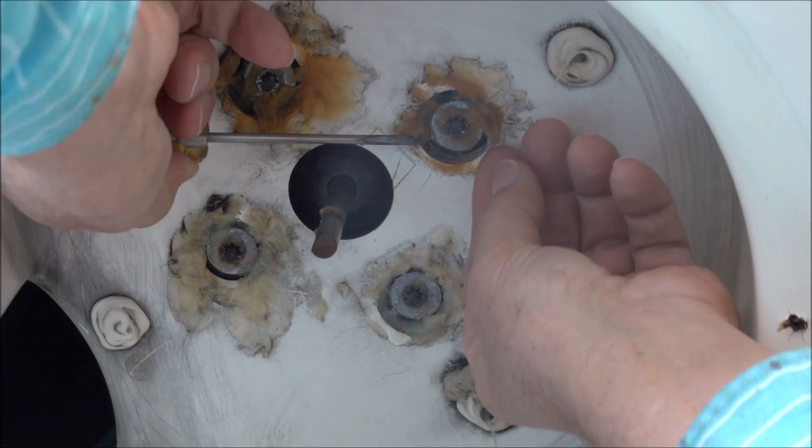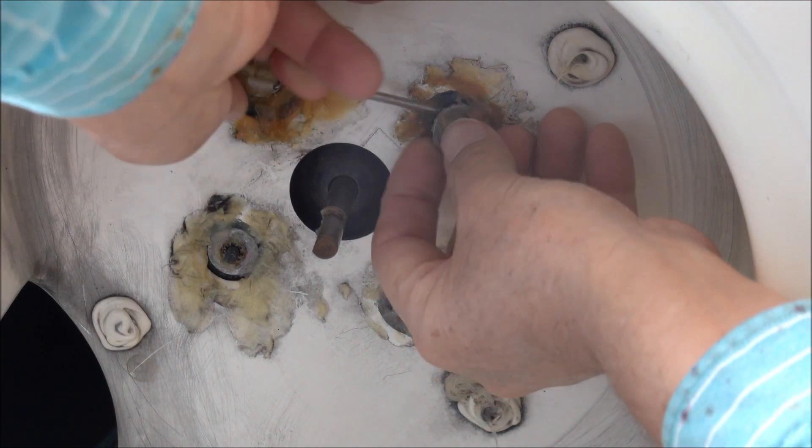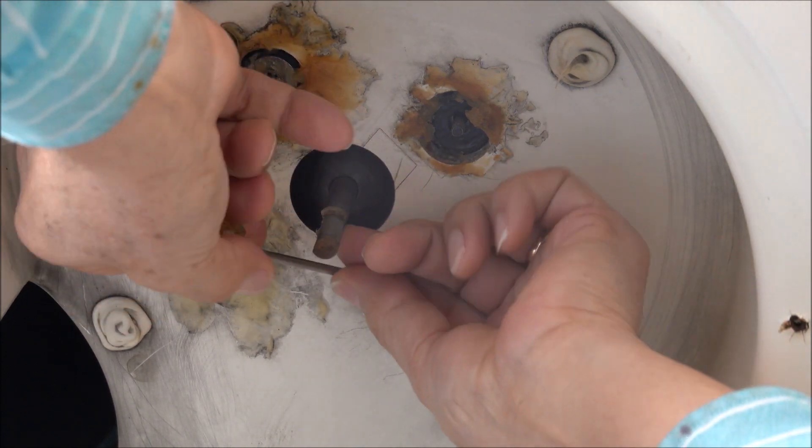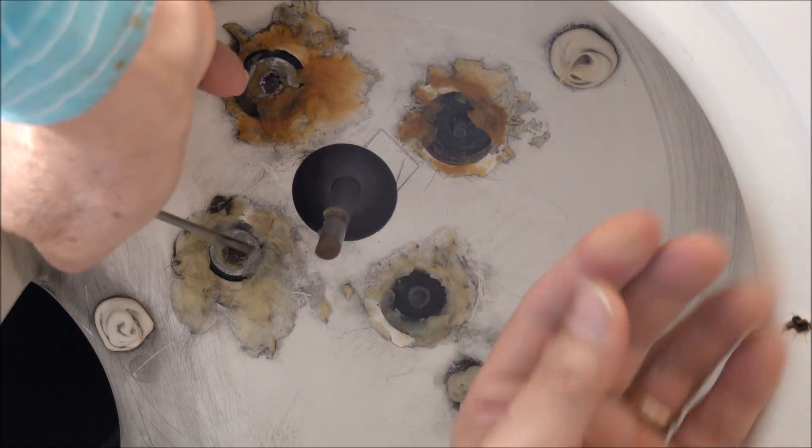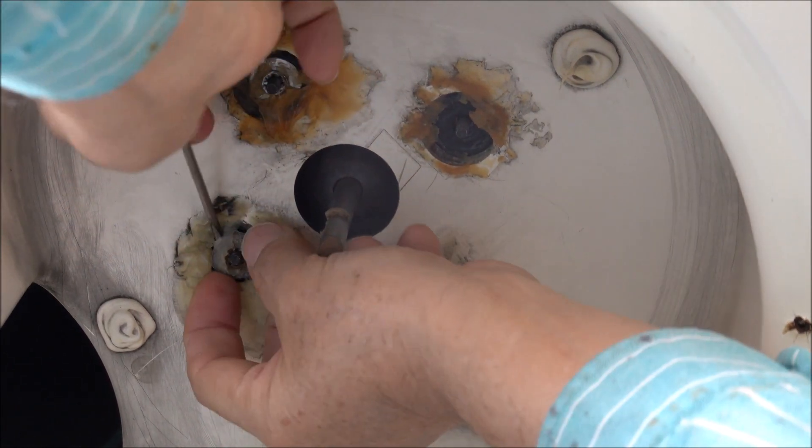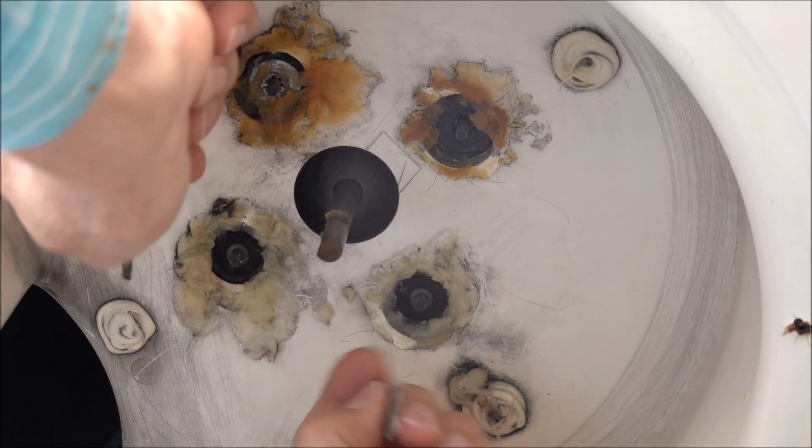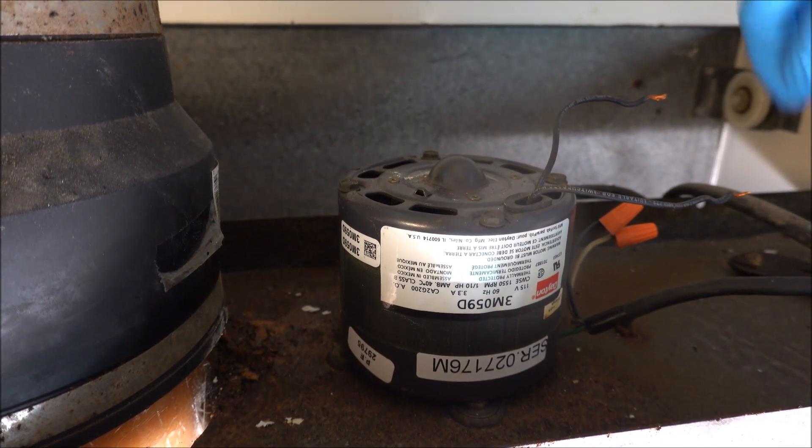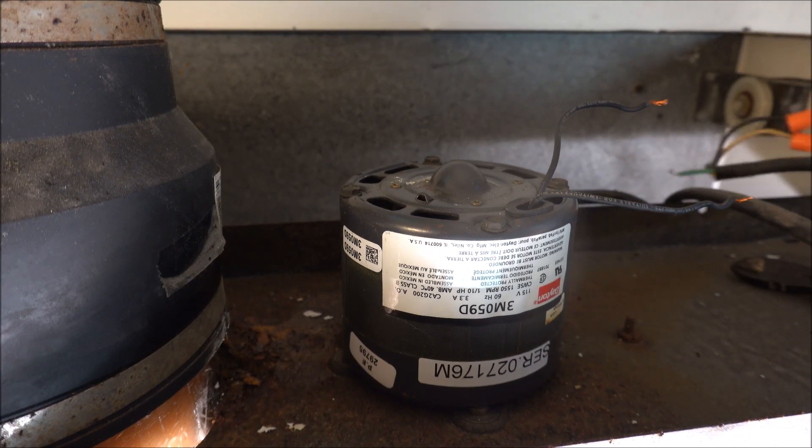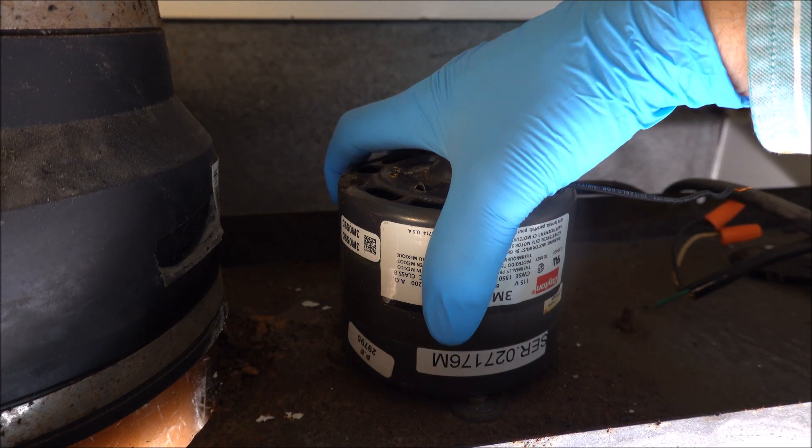Now I'm going to pry the washers off of there, save them, reuse them. Got all the bolts loose underneath, got the ground wire off, got everything loose. So I'm just going to pull this motor up out of here now. It should just come right off.